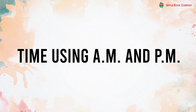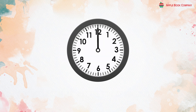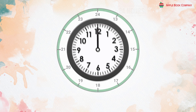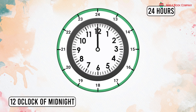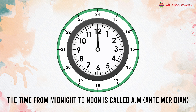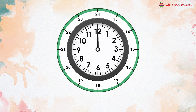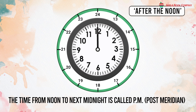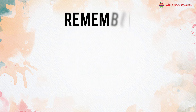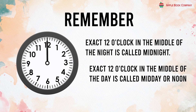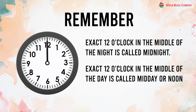Time using AM and PM. While counting time, the word 'day' does not mean just the time of sunlight — a day means 24 hours, from 12 o'clock midnight to the next 12 o'clock midnight. The time from midnight to noon is called AM (ante-meridian), which means before noon. The time from noon to the next midnight is called PM (post-meridian), which means after noon. Exact 12 o'clock midnight is called midnight, and exact 12 o'clock in the middle of the day is called midday or noon.